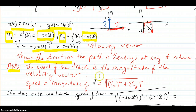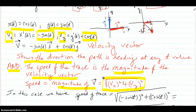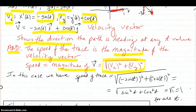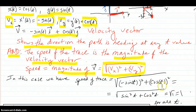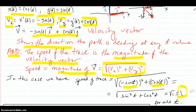The speed at which the point moves on the path equals the magnitude of the velocity vector, which by the Pythagorean theorem is the square root of the x-component squared plus the y-component squared. For this circle, the speed comes out to 1 no matter what t is, so the path is uniformly traced out — as we've seen in animations.